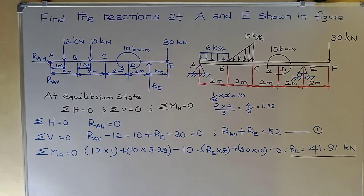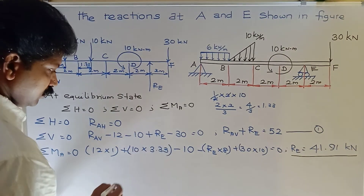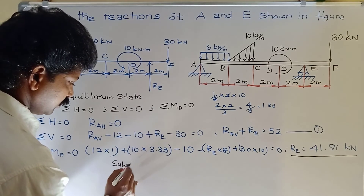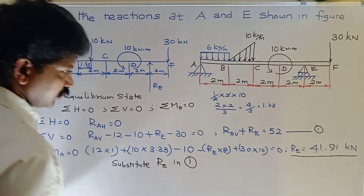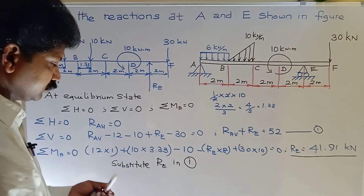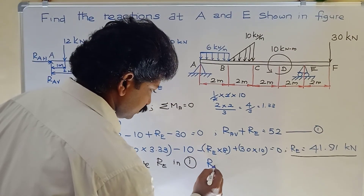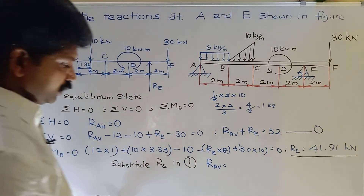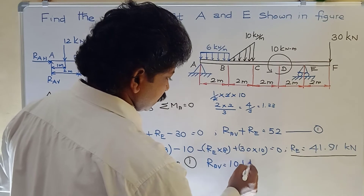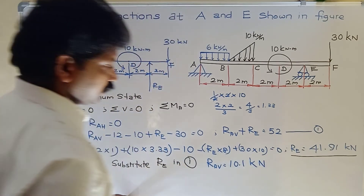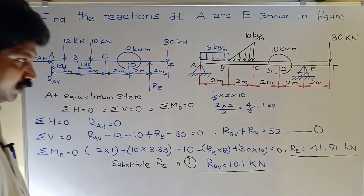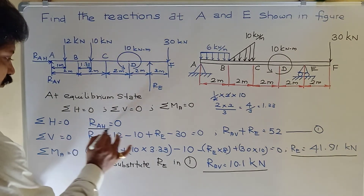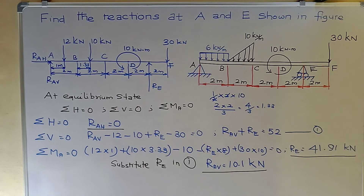Substituting RE = 41.91 kN into Equation 1: RAV + 41.91 = 52, so RAV = 10.1 kN. Summary of results: RAH = 0, RAV = 10.1 kN, and RE = 41.91 kN.